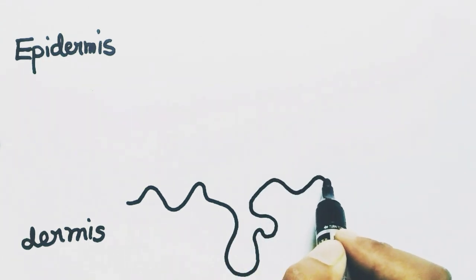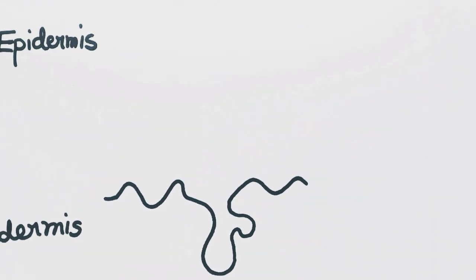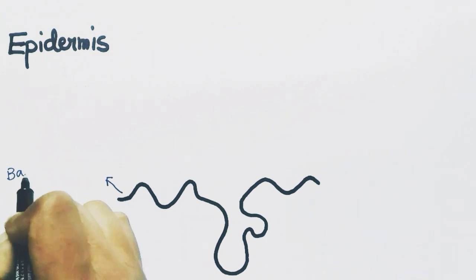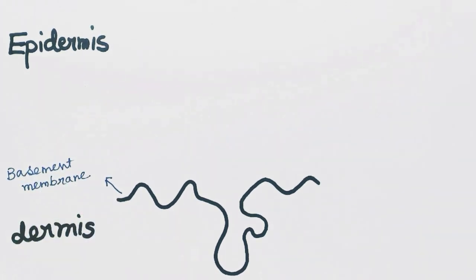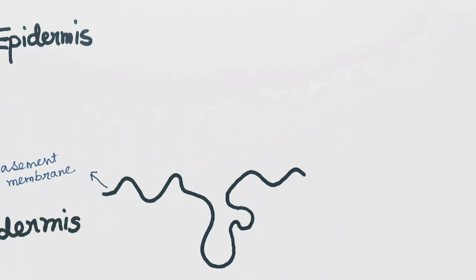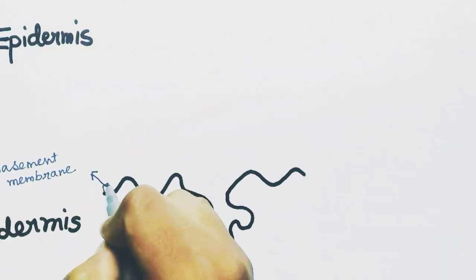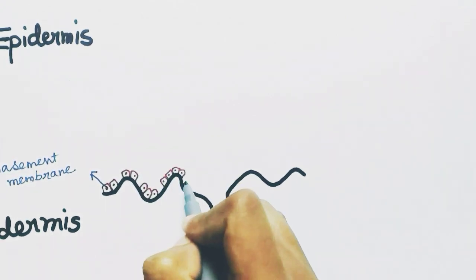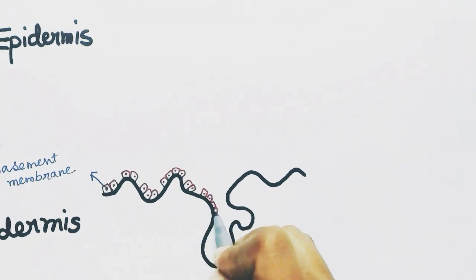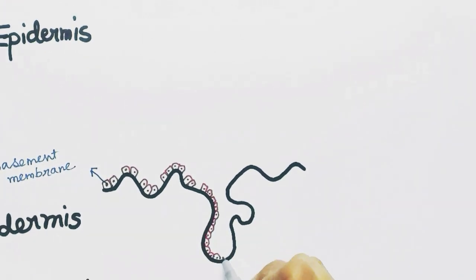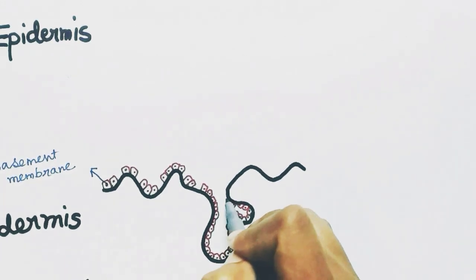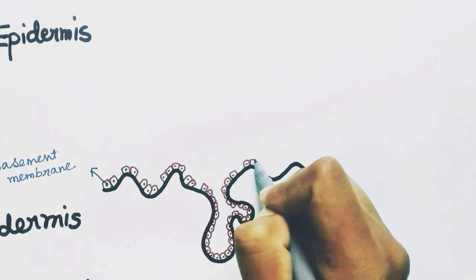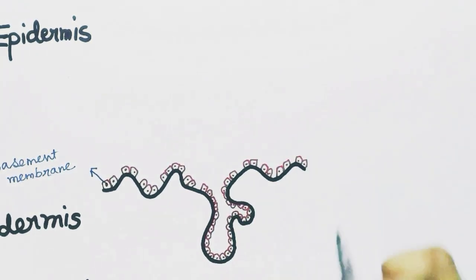These keratinocytes are situated on the basement membrane. This is the basement membrane on which the first layer of the keratinocytes are situated. These cells are also called stem cells because they can produce new cells. These epidermal stem cells also extend to the hair follicles of the dermis. These cells are cuboidal or columnar in shape.